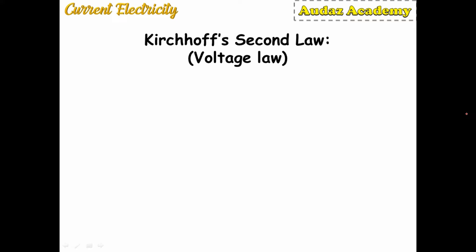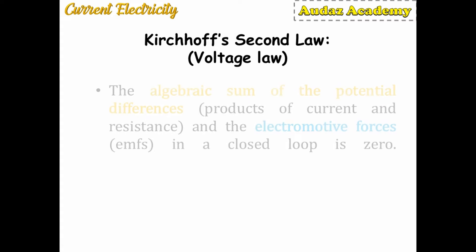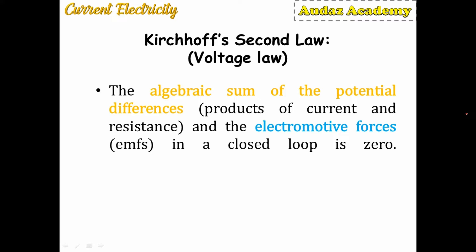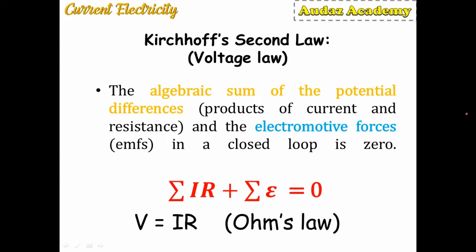Next we understand Kirchhoff's second law, also called the voltage law. It states that the algebraic sum of the potential differences (IR) and the electromotive force (EMF) in a closed loop is zero. Mathematically: summation IR + summation E = 0. Since V = IR by Ohm's law, summation IR is the sum of potential differences across each resistor.